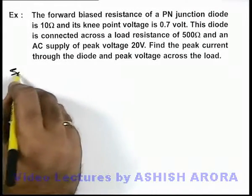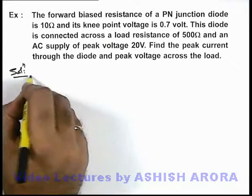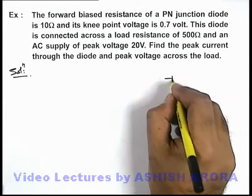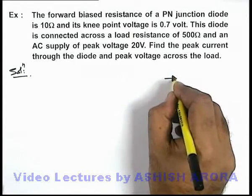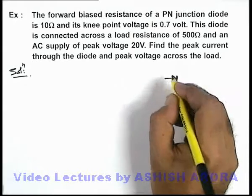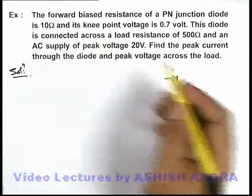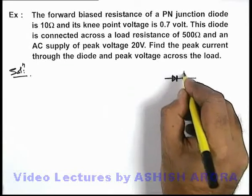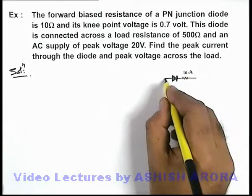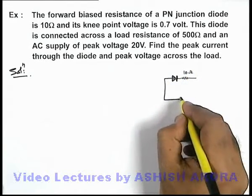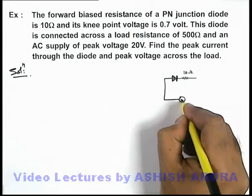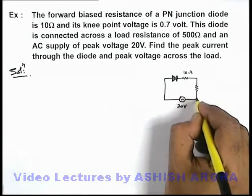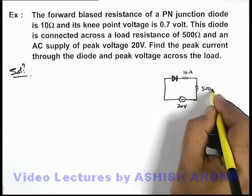For the solution, if we draw the circuit diagram here, we can see there is a p-n junction diode with its forward bias resistance of 10 ohms. We can consider its 10 ohm internal resistance to be connected in series, and it is connected across a supply of peak voltage 20 volts along with the load resistance of 500 ohms in series.